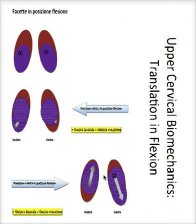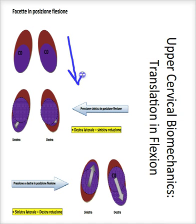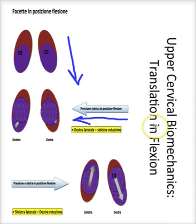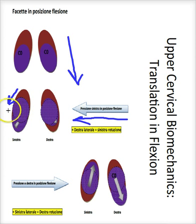If we now position the facets in flexion — so we put them into a relative posterior glide — then we have taken up even more of the posterior glide movement. If we then introduce a left translation from right to left, we will maximize the posterior glide of the left C0 on the concave C1.